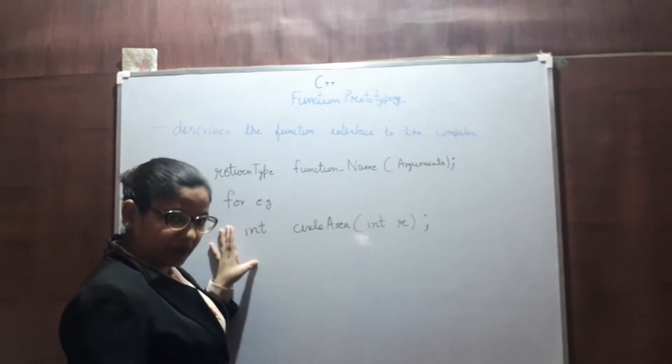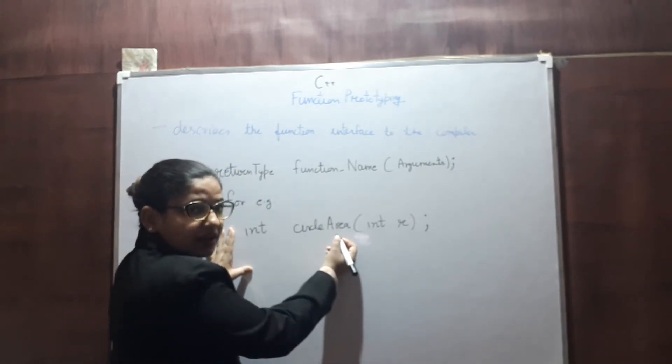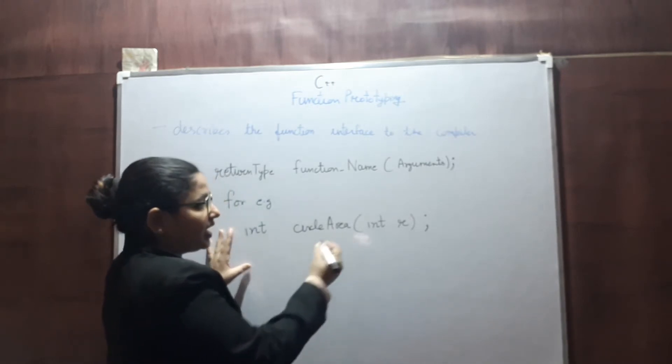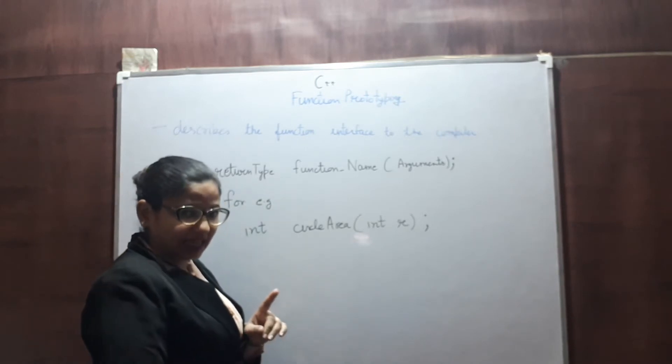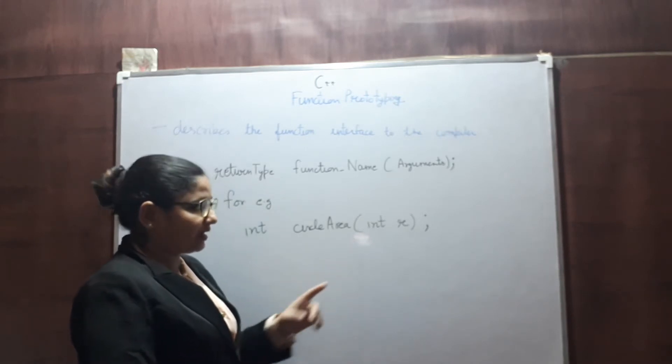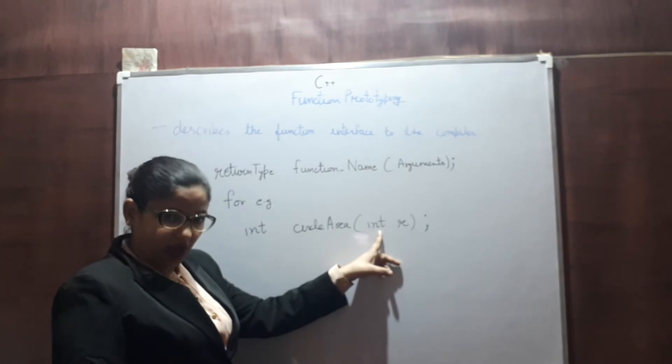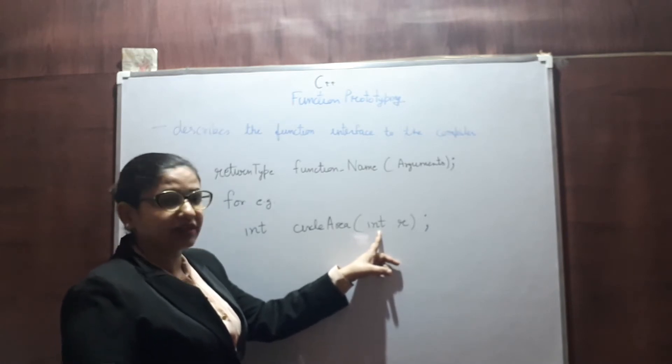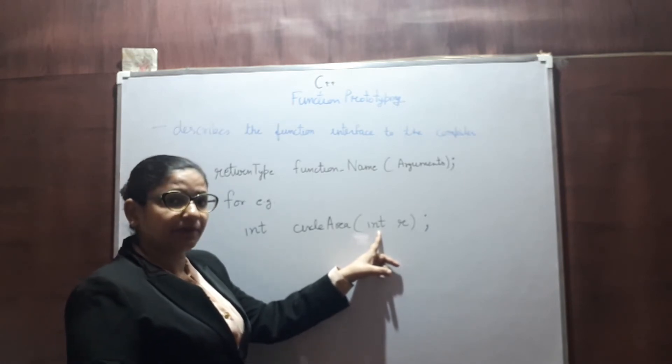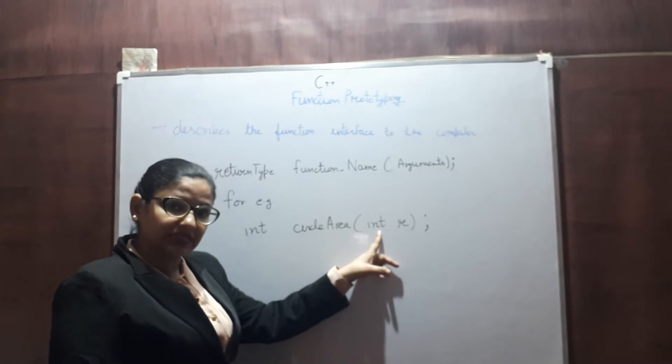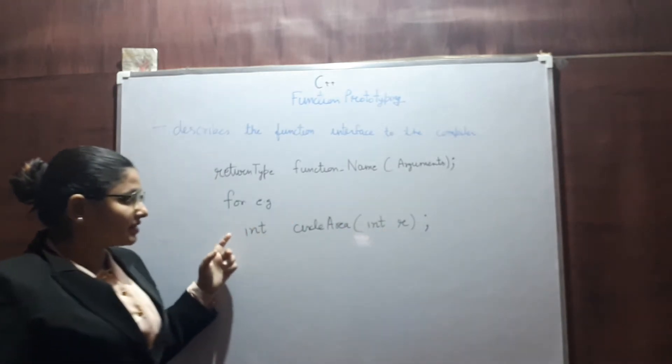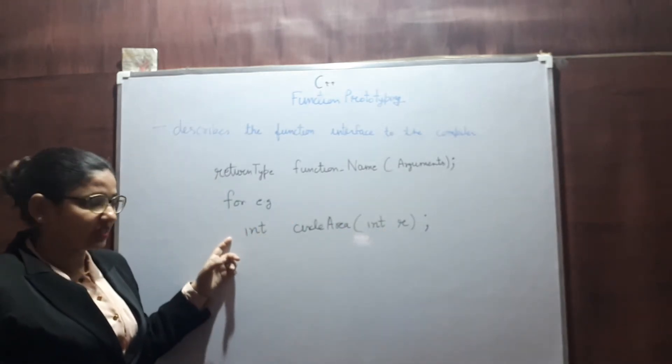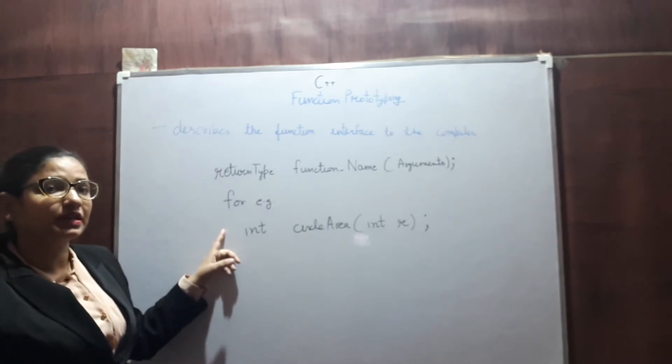In this statement, circle_area is the function name, and this function is taking single input argument, that is int r. The type of input argument is integer, number of input arguments is 1, and this function after execution is returning 1 integer.